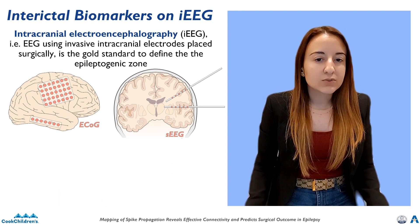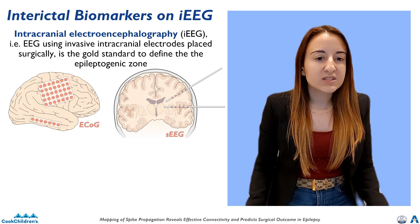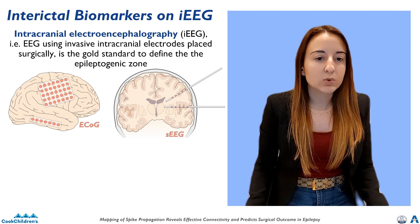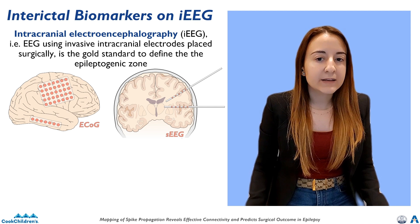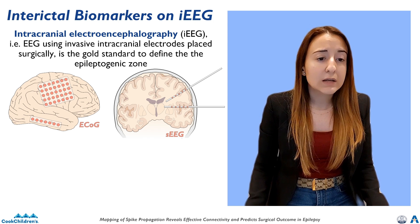The gold standard to define the seizure onset zone is intracranial electroencephalography, an EEG recorded with invasive electrodes placed surgically on the brain surface or deeply within the brain. However, relying only on the seizure onset zone may not indicate the entire extent of the epileptogenic zone, leading to ineffective surgery.